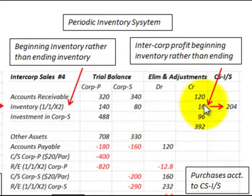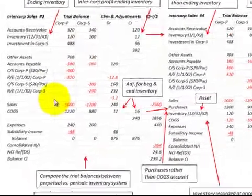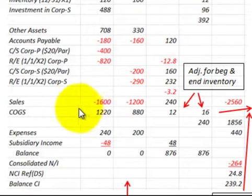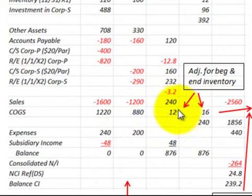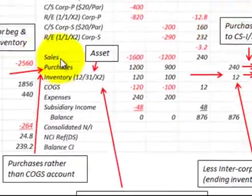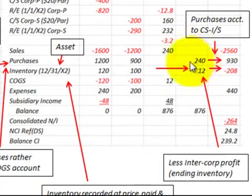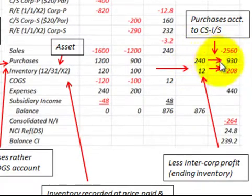This inventory account is also carried over to the consolidated income statement. For the other main difference: in the perpetual inventory system we have a sales account and a cost of goods sold account, and that cost of goods sold account is adjusted for any intercompany profit based on both the beginning and ending inventory. For the periodic system, instead of using a cost of goods sold account, we use a purchases account, which is also adjusted along with the sales account.